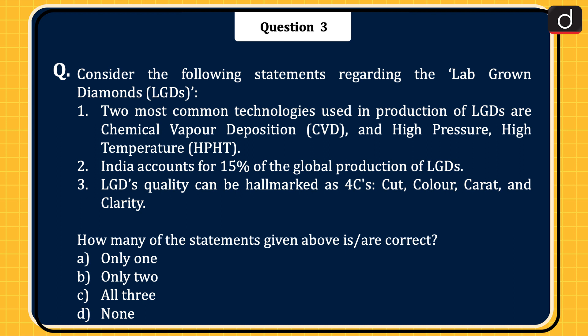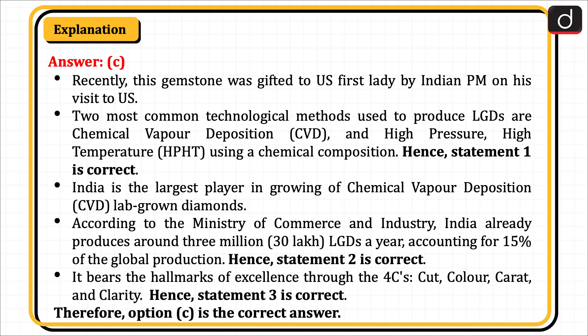The correct answer is Option C, all three. Recently, this gemstone was gifted to the US First Lady by Indian PM on his visit to the US. The two most common technological methods used to produce LGDs are chemical vapour deposition and high-pressure high-temperature — hence Statement 1 is correct. India is the largest player in growing CVD lab-grown diamonds; according to the Ministry of Commerce and Industry, India produces around 3 million (30 lakh) LGDs a year, accounting for 15% of global production — hence Statement 2 is correct. LGDs bear the hallmarks of excellence through the four Cs: cut, colour, carat, and clarity — hence Statement 3 is correct. Therefore, Option C is the correct answer.